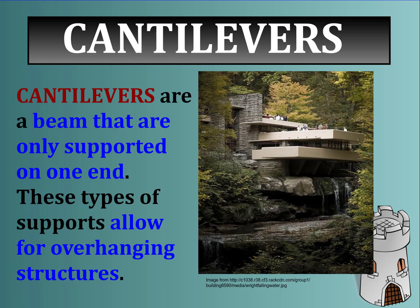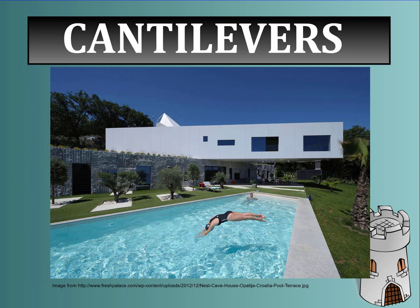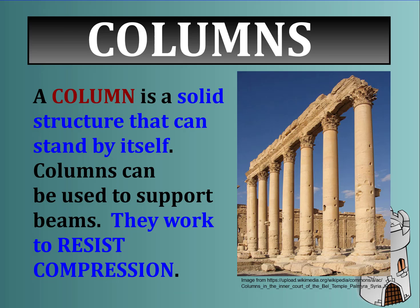Cantilevers are beams that are only supported at one end, and these supports allow for overhanging structures. This is an amazing cantilever structure — you can see it is only supported on one end. A column is a solid structure that can stand by itself. Columns can be used to support beams and they work to resist compression.